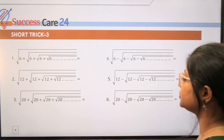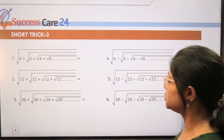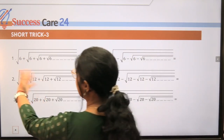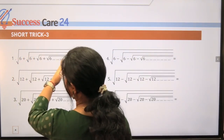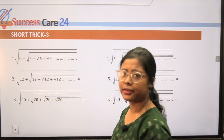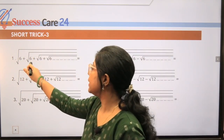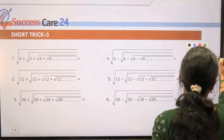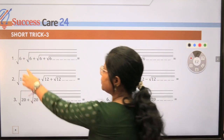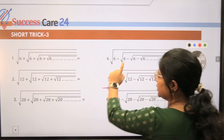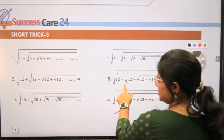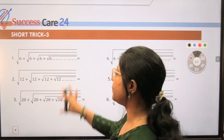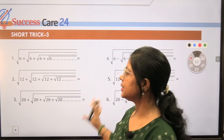Now let's come to Short Trick Number Three. The pattern here is a bit different — same structure but now between the terms there are signs: some terms are added, some are subtracted. So some terms have a plus sign, some have a minus sign — plus here, minus there.